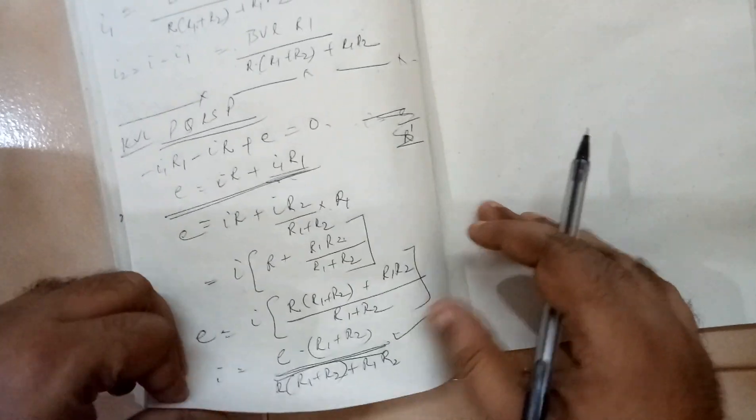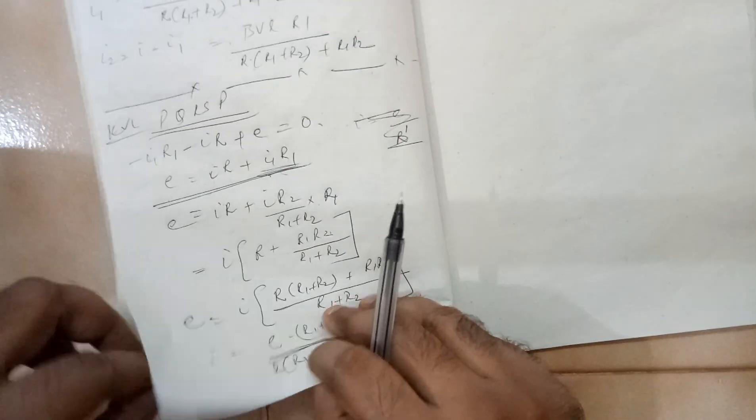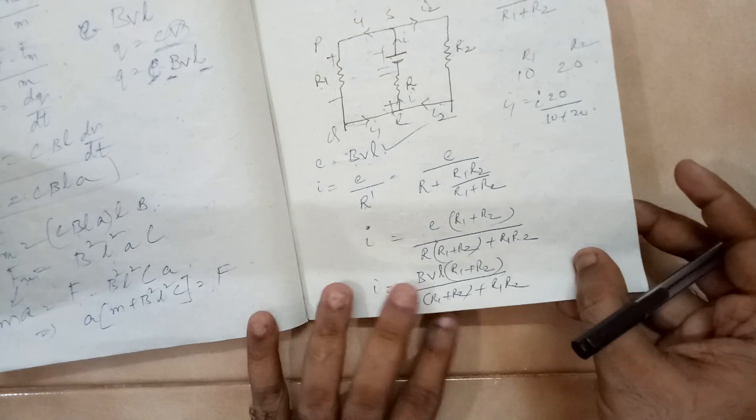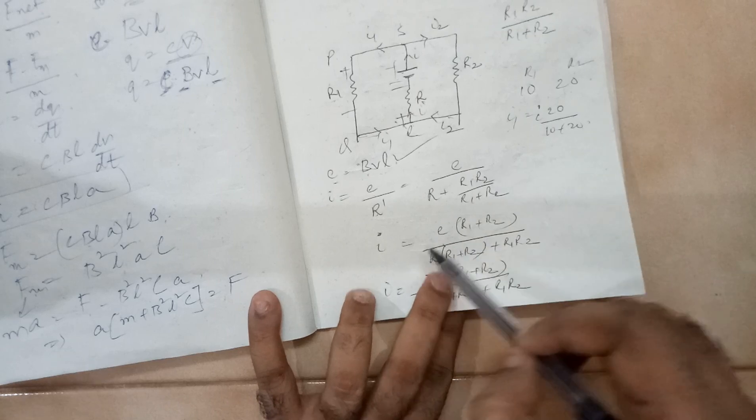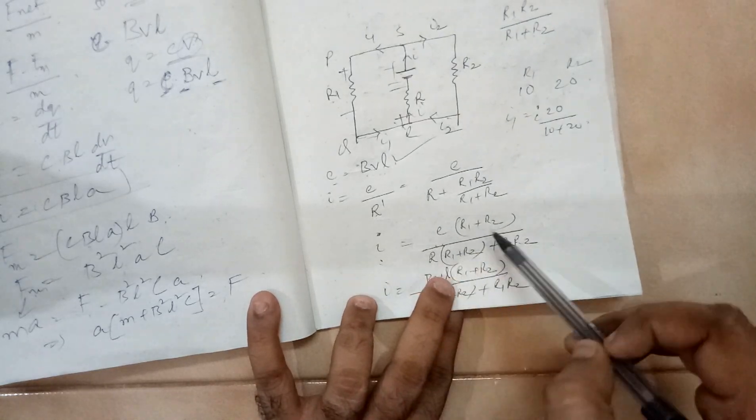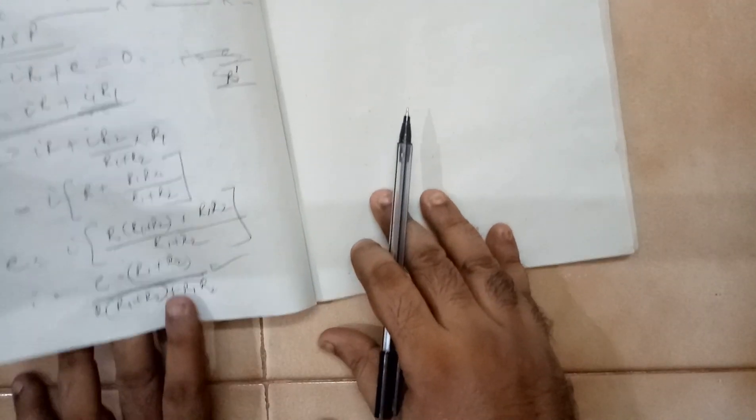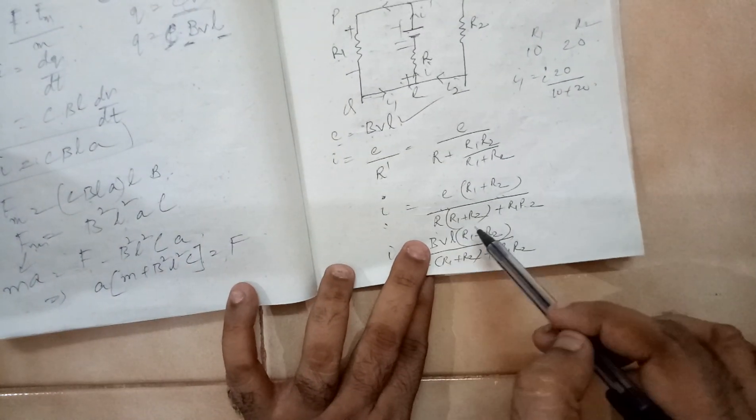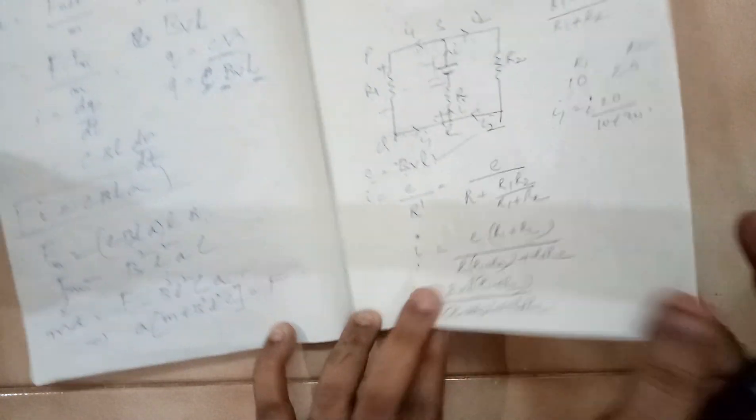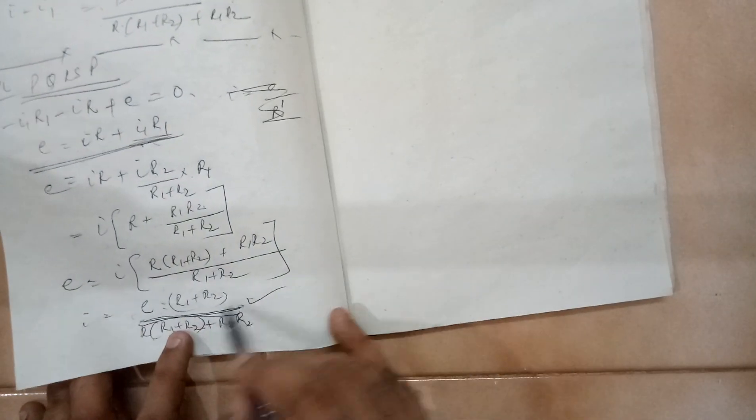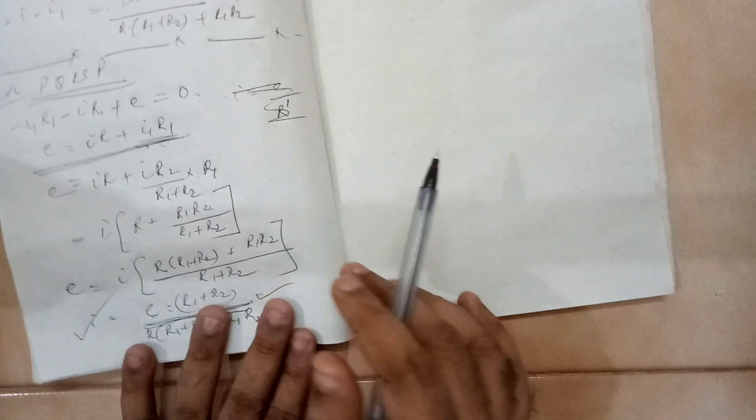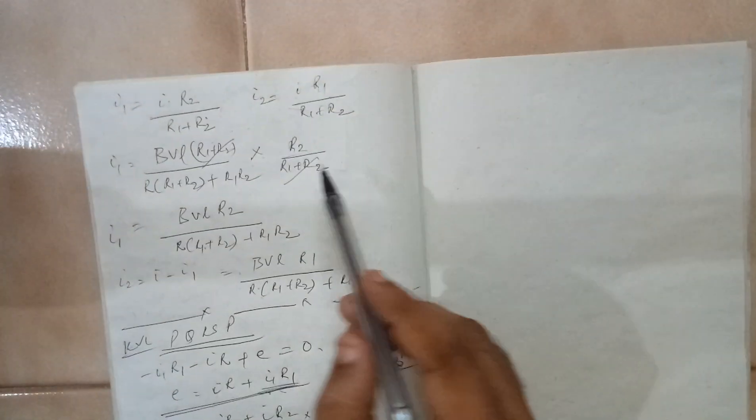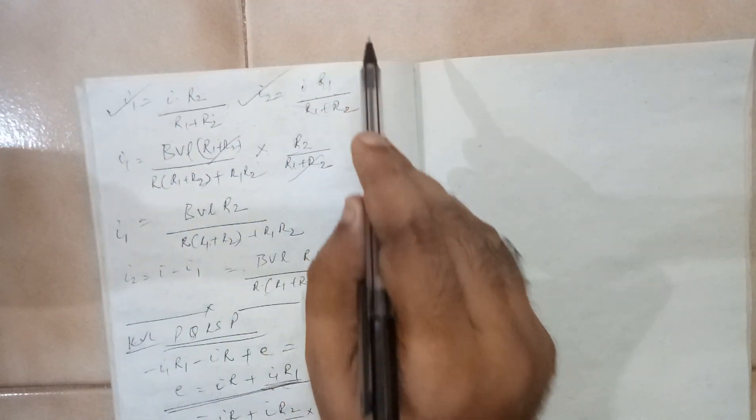So if you compare this with the previous answer, here we have calculated the value of E is equal to BVL, and what was the I value? It was E into R1 plus R2 divided by R into R1 plus R2 plus R1 R2. Substituting the value of E is equal to BVL, you will get the value of I. Once you get the value of I, you can find out the value of I1 and I2.